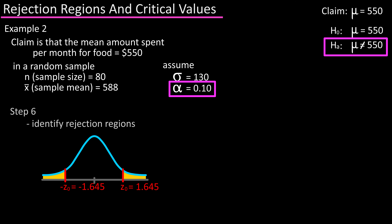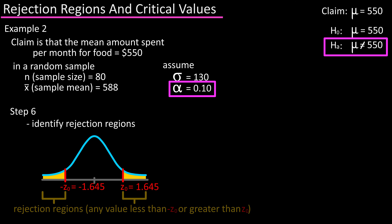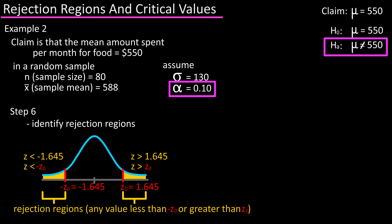In the z-distribution table, those values are negative 1.645 and positive 1.645, so those are our critical values. Step six: identify the rejection regions — any value less than negative 1.645 or any value greater than positive 1.645.